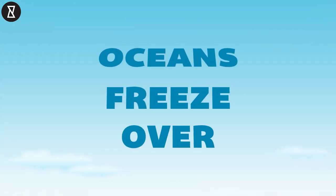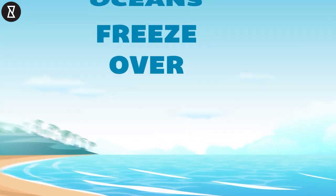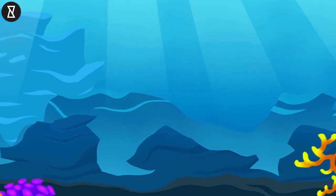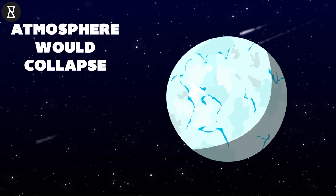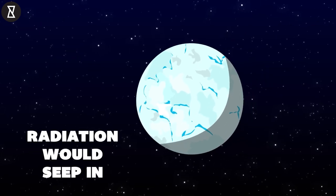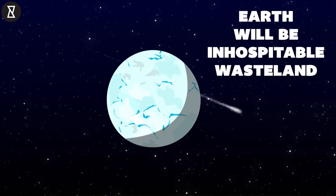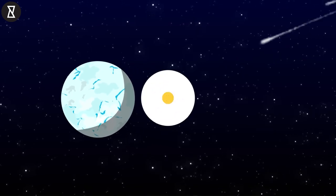Oceans freeze over. Within two months, the ocean's surface would freeze over, but it would take another thousand years for our seas to freeze solid. By then, however, the atmosphere would collapse, radiation would seep in, and Earth would be an inhospitable wasteland drifting aimlessly through space.